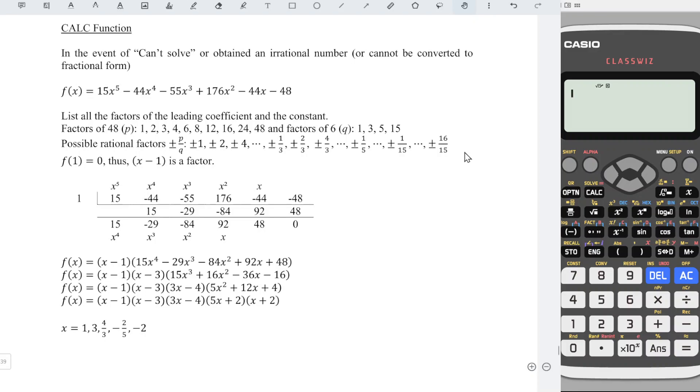What we have to do here is list a few possible fractional factors and apply the trial and error method. So first, enter the function given. We have 15x to the power of 5